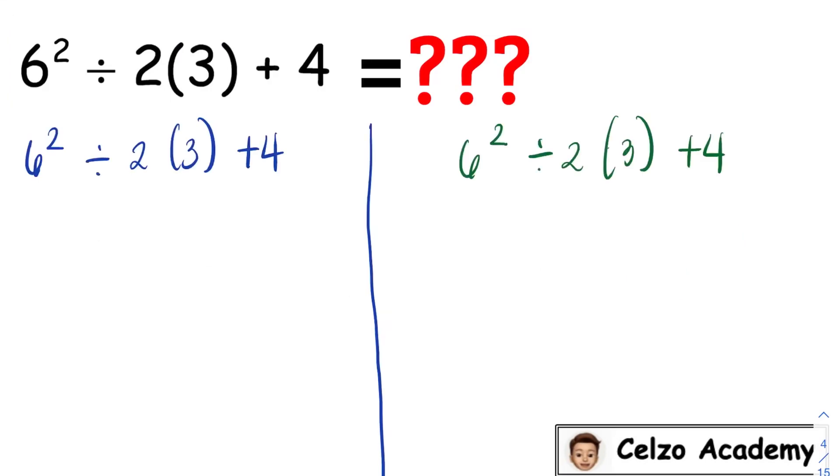First, I will simplify the parentheses 2 times 3, and that is 6. Rewriting the other terms, we have 6 squared divided by 6 plus 4. Now, I will simplify the exponent 6 squared. And 6 squared is 36, so 36 divided by 6 plus 4.